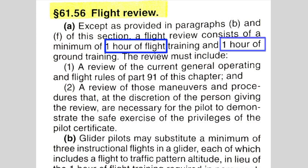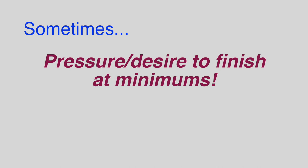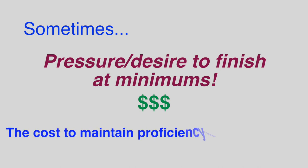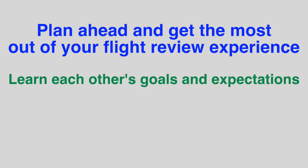Part 61.56 explains that the flight review consists of a minimum of one hour of flight training and one hour of ground training. Additionally, the review must include current general operating and flight rules of part 91. For the flight training, the person giving the flight review chooses what maneuvers and procedures will be enough to demonstrate that you are safe to exercise the privileges of your pilot certificate. An unfortunate perception some pilots have is that they put pressure on themselves and their instructor to be signed off at these minimums — exceeding this time minimum should not feel like failure.